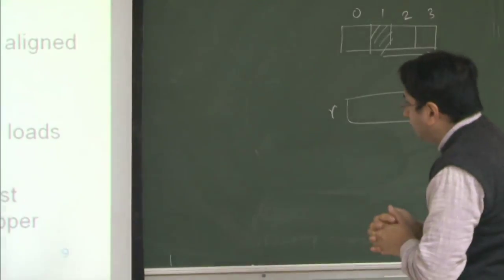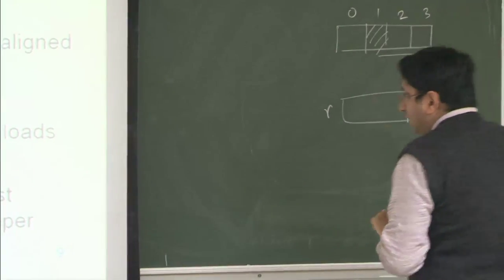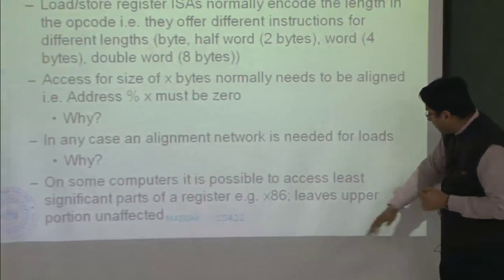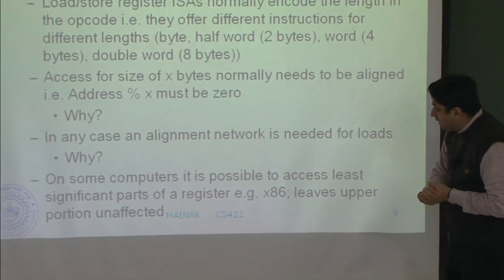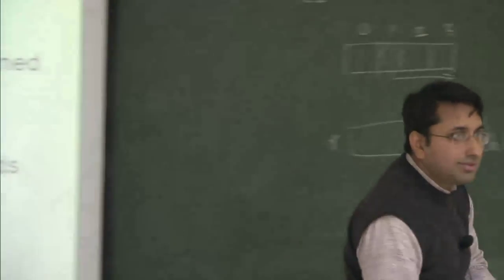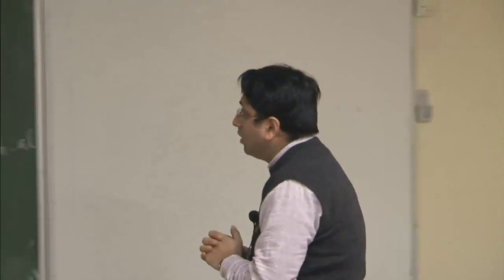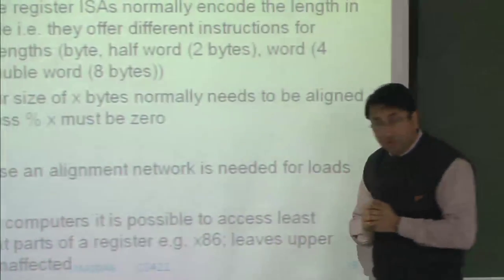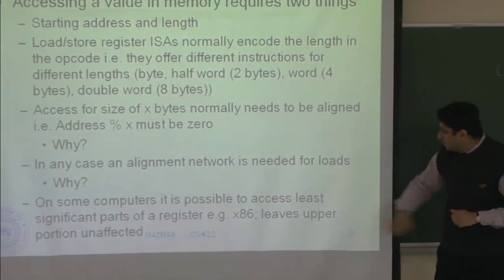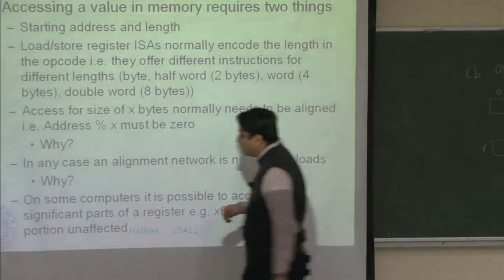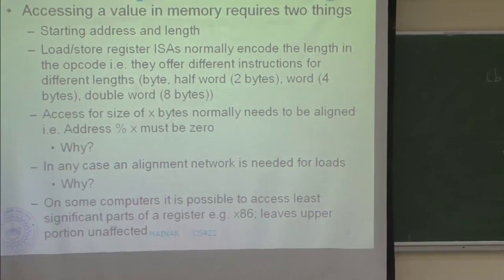On some computers, such as x86, it is possible to access least significant parts of a register and leave the upper portions unaffected. An alignment network is also needed for store operations. In general, all memory operations require an alignment network.